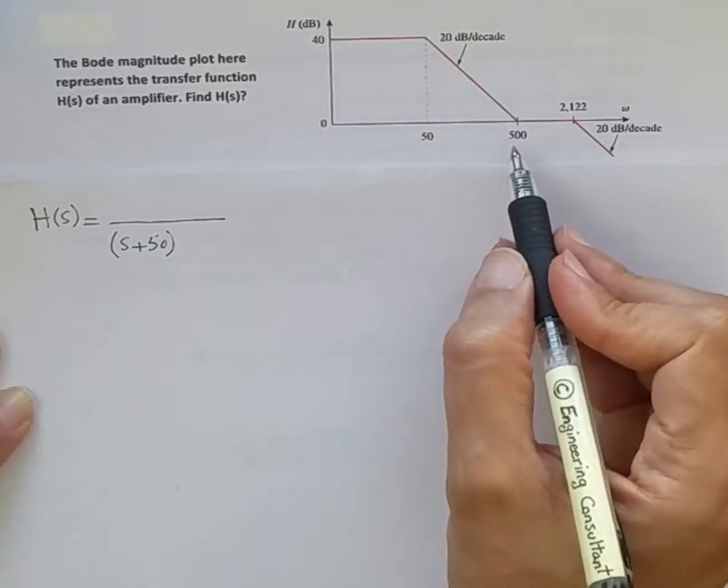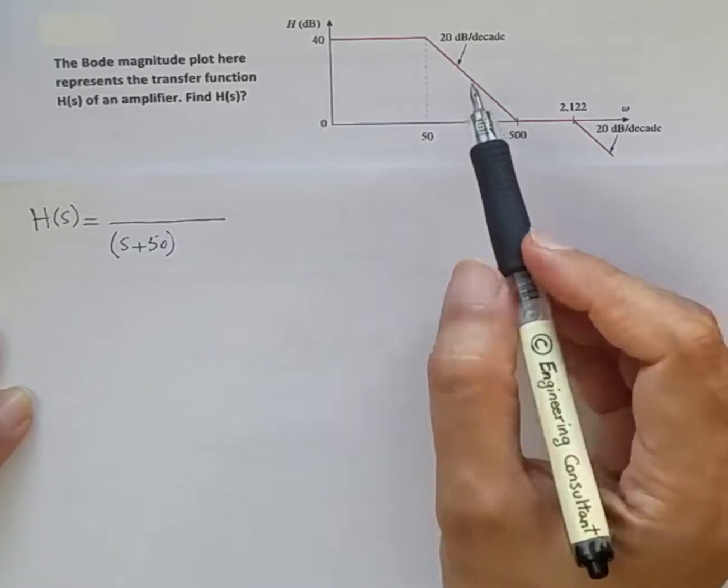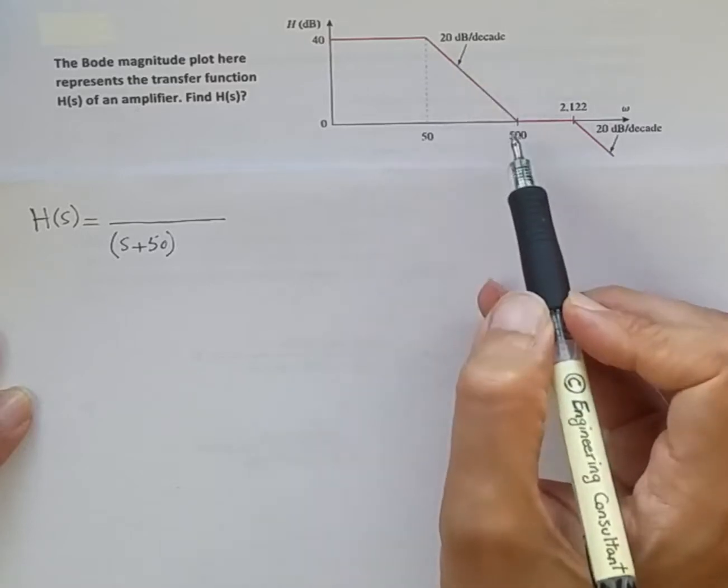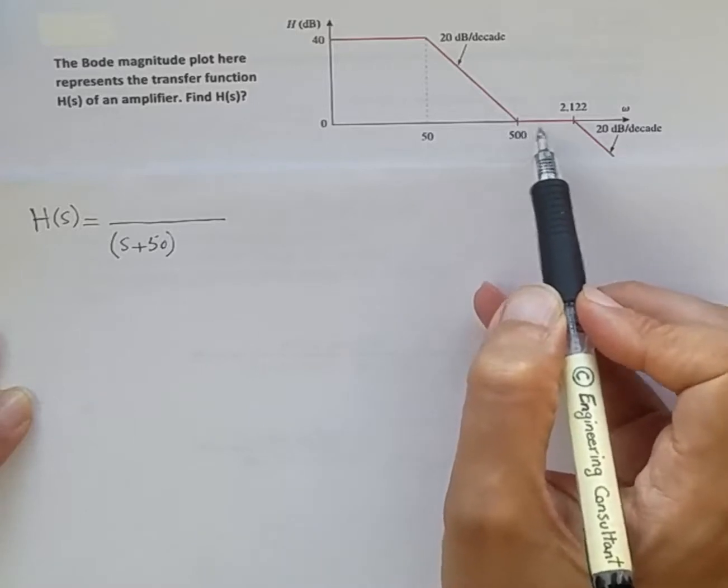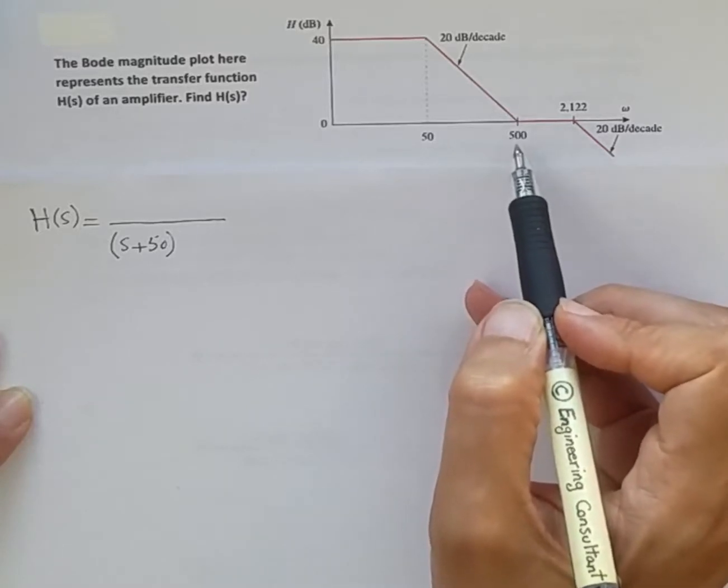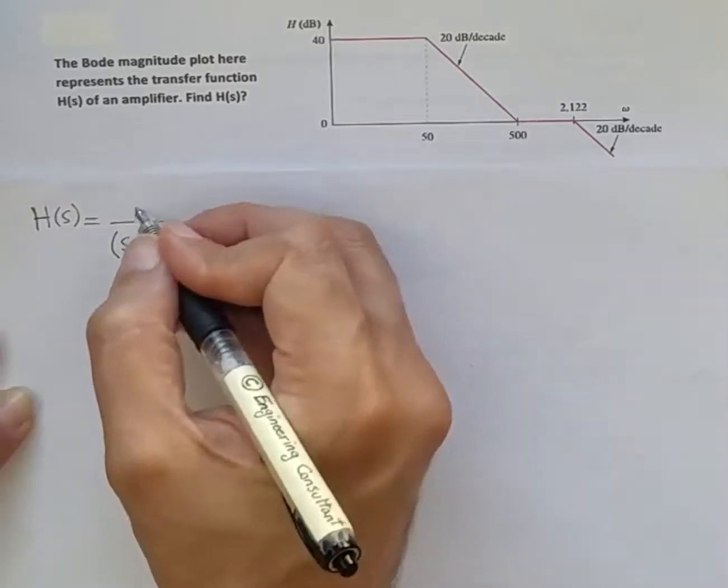At that point we can see that the rate of 20 dB per decade drop in magnitude stops and now the magnitude is flat. The only way this can happen is if there is a zero at exactly 500 radians per second, so we should have (s + 500) in the numerator.